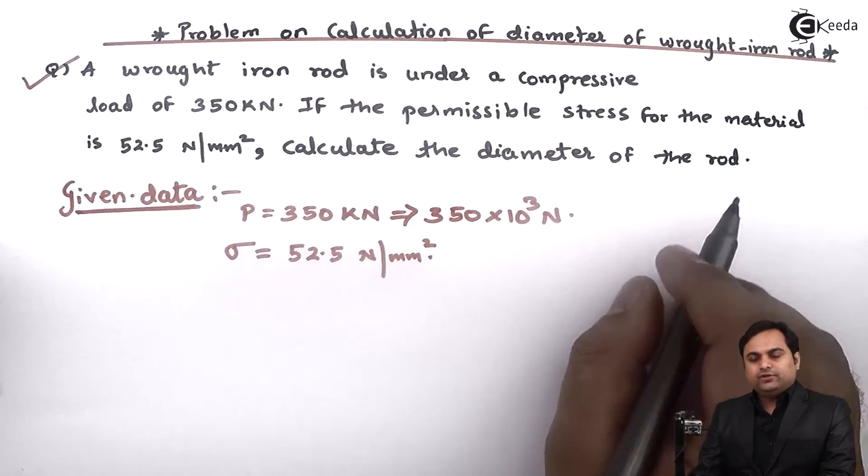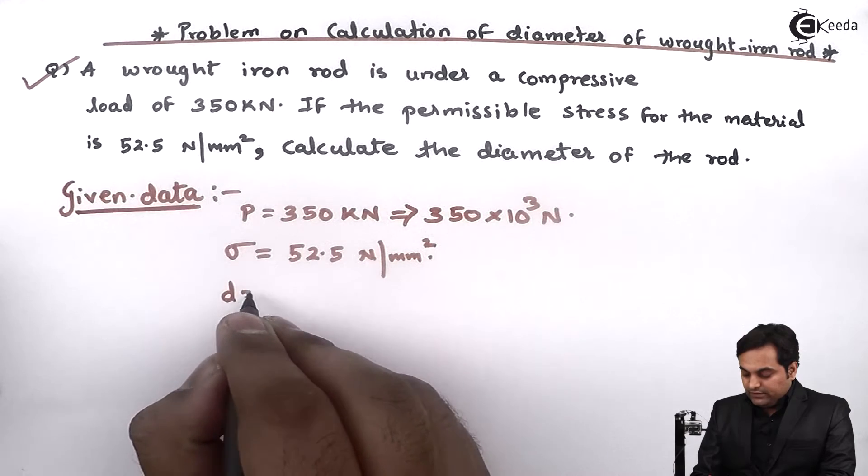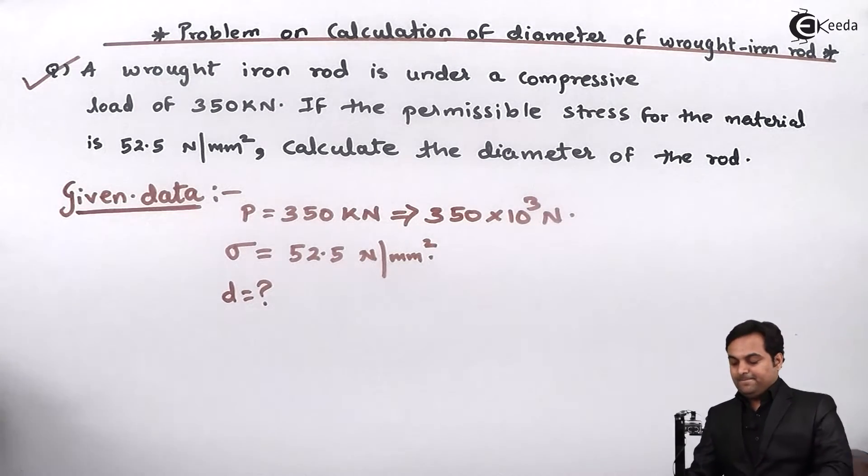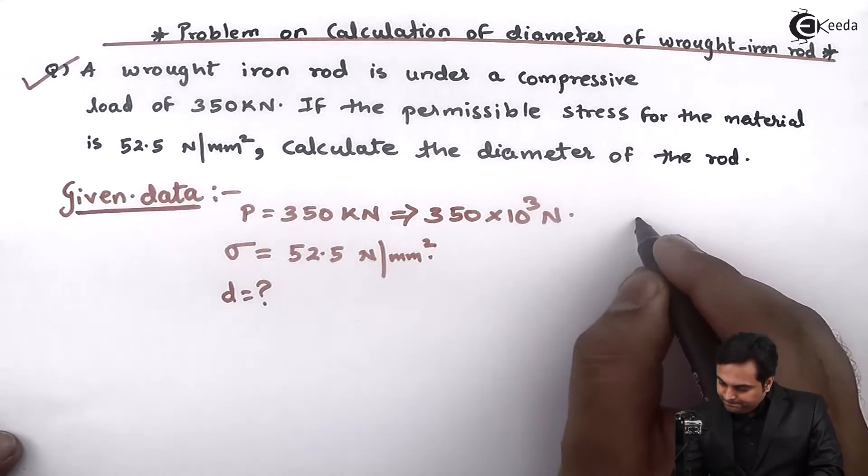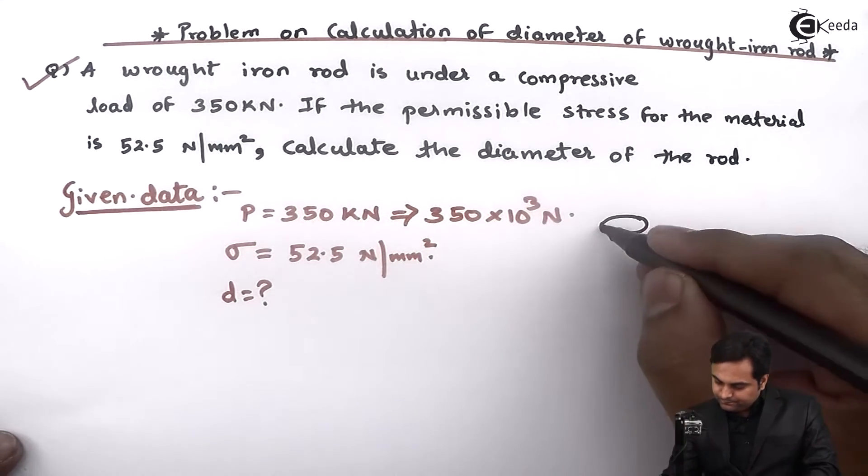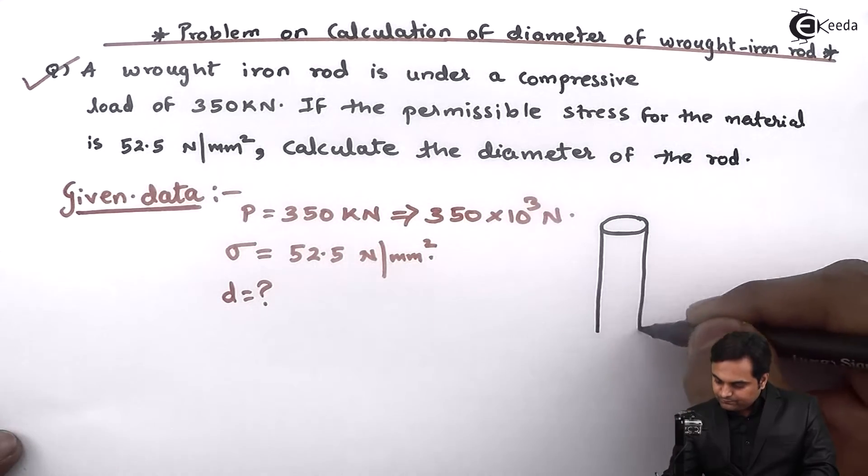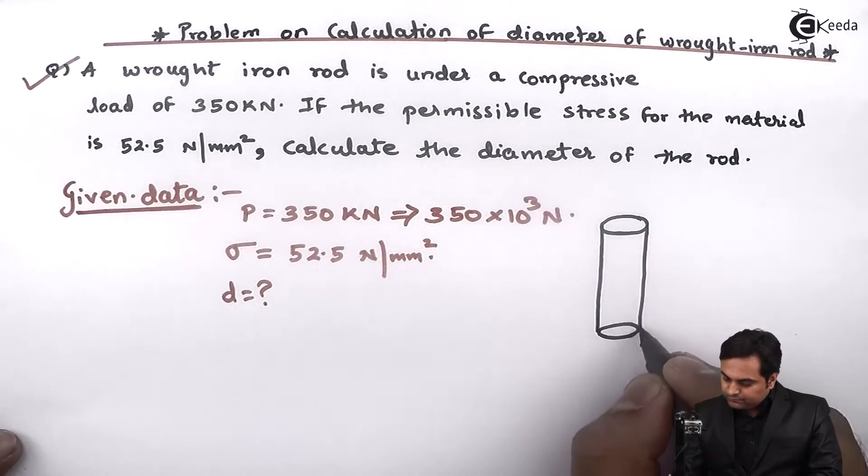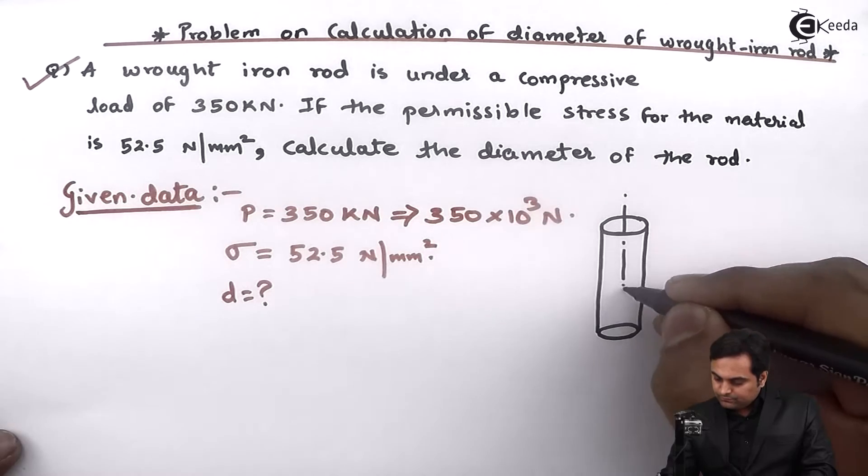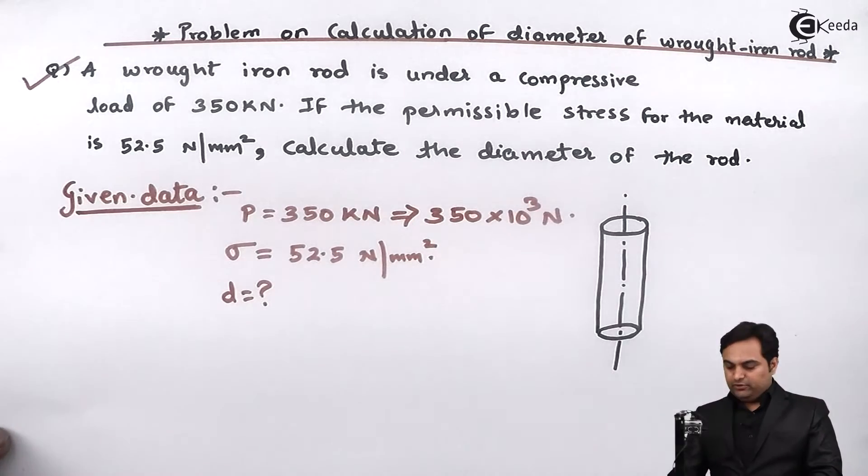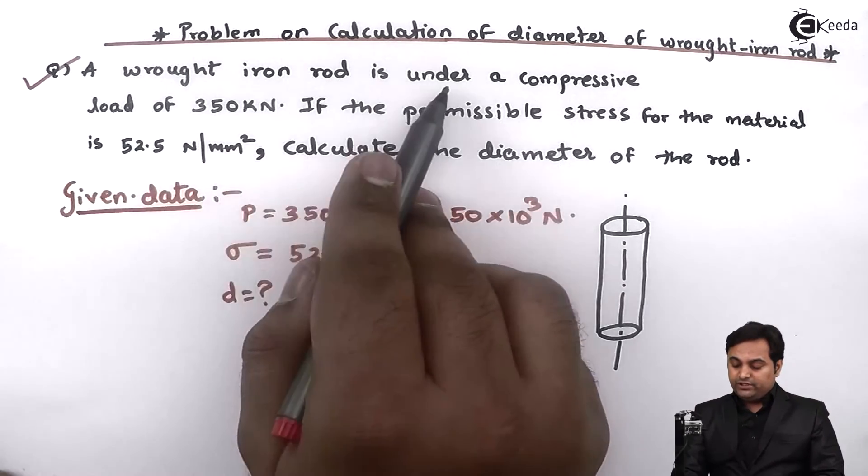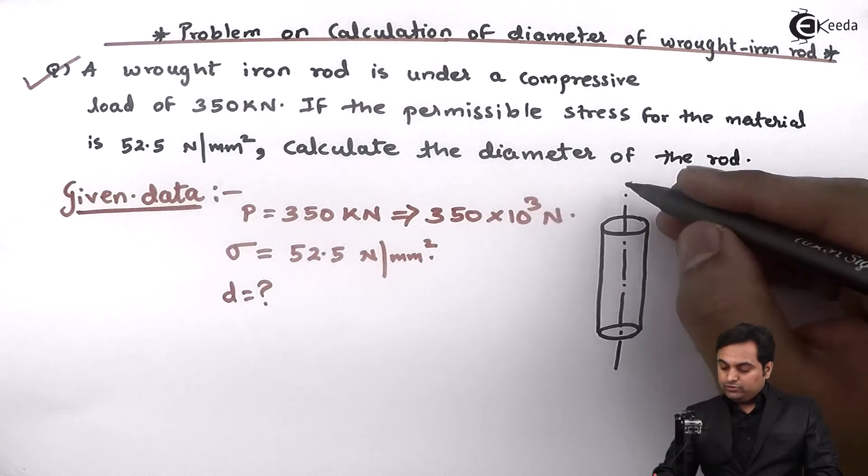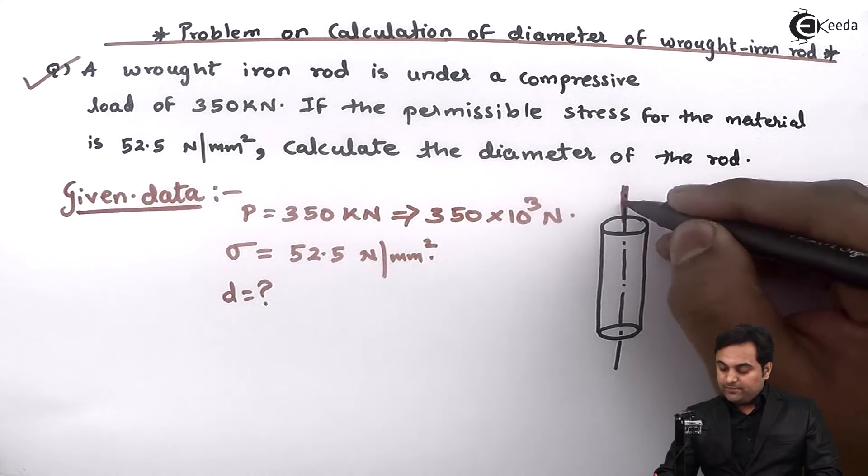calculate the diameter of the rod, I'll denote diameter by small d. Now here I draw a diagram. We have a rod here which is made up of wrought iron. This is the axis of the rod, and it is given in the problem that a wrought iron rod is under compressive load, so compressive load is a push type of load